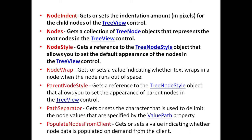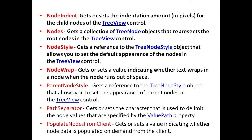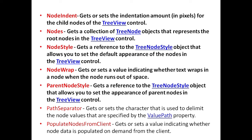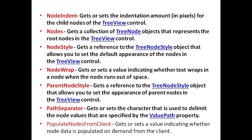NodeStyle property is used to get a reference to the TreeNodeStyle object that allows the user to set a default appearance of the nodes in the TreeView control. NodeWrap property is used to get or set a value indicating whether text wraps in a node when the node runs out of space. ParentNodeStyle property is used to get a reference to the TreeNodeStyle object that allows the user to set the appearance of the parent node in a TreeView control. PathSeparator property is used to get or set the character that is used to delimit the node values specified by the ValuePath property.